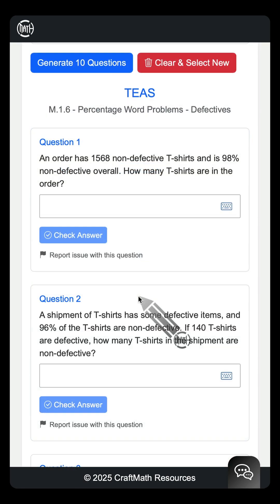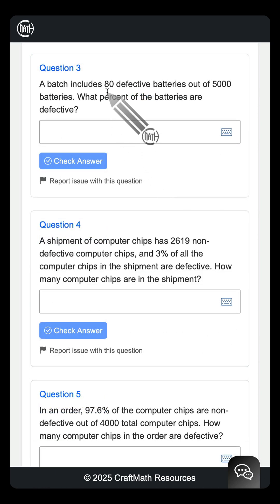And with the infinite Q bank, when you generate 10 questions, totally random, let's just look over these real quick. Sure, both of these are talking about t-shirts. Two completely different questions, though, if you actually read them. But then we have problems talking about batteries, computer chips. But the important piece here is what that question is asking you and you making sure you understand what is given.